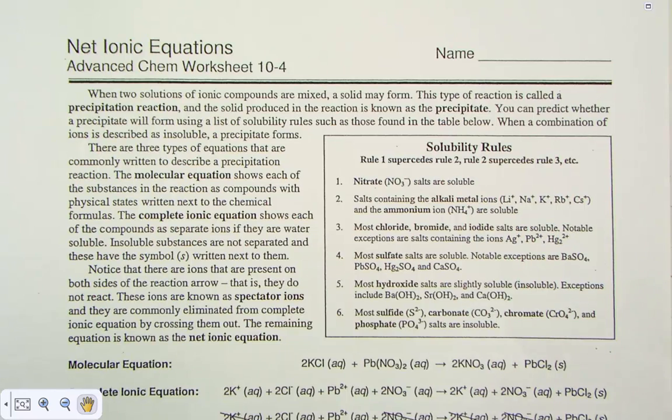When two solutions of ionic compounds are mixed, a solid may form. This type of reaction is called a precipitation reaction, and the solid produced in the reaction is known as the precipitate, that solid product that falls out of solution.